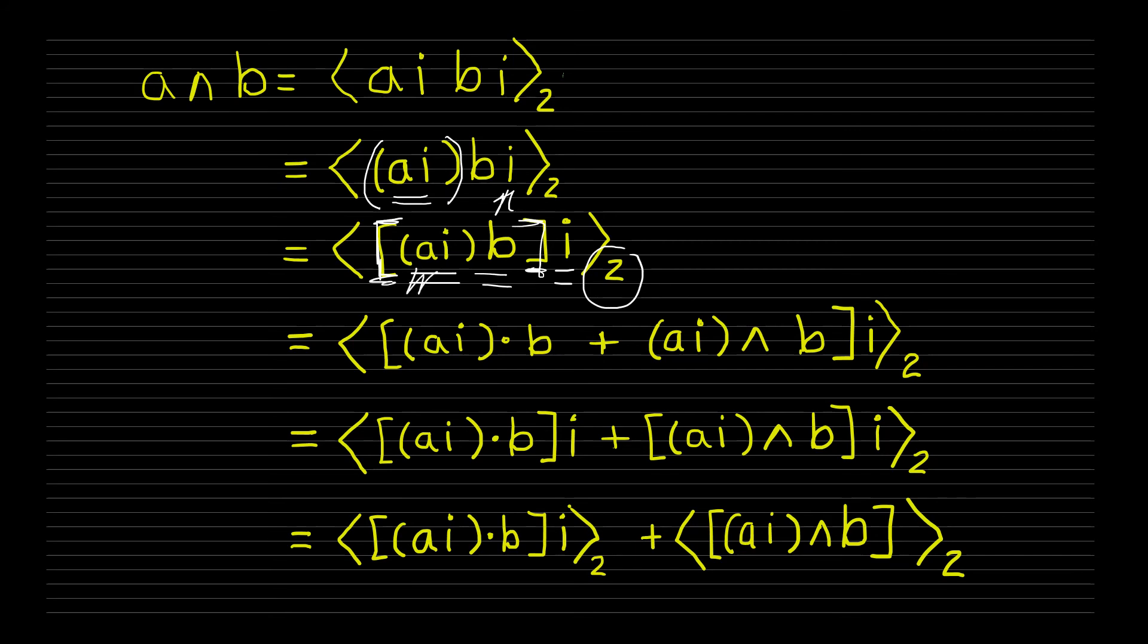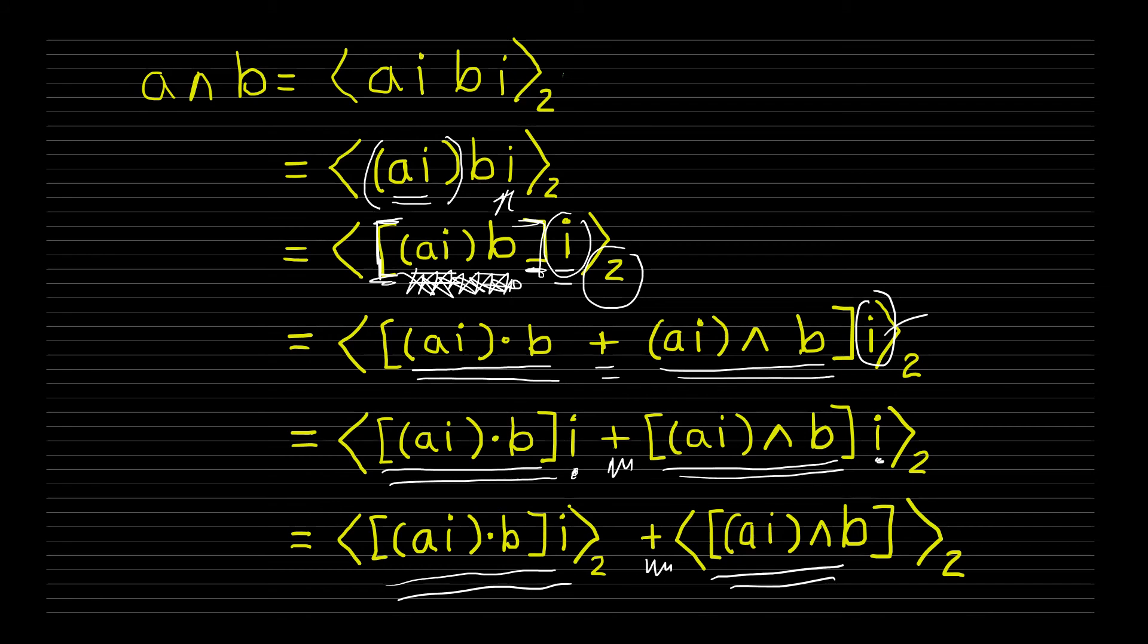Now what he did was he expanded this geometric product of the vector ai with the vector b. And of course that would be ai dot b plus ai wedge b, and we still have our factor i off here at the end. Then what he did was he distributed that factor i over the sum. So now we have ai dot b times i plus ai wedge b times i. Then he used the fact that the grade two part of a sum is the sum of the grade two parts.